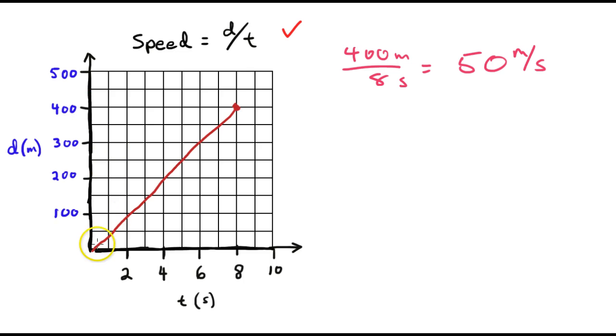And it doesn't have to be a straight line. It could have been going out slow and then going something like that. We still have the same beginning. We have the same end. And it traveled the same distance.